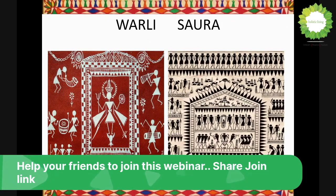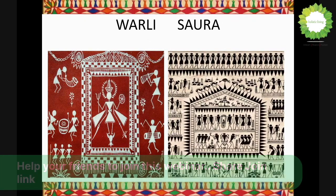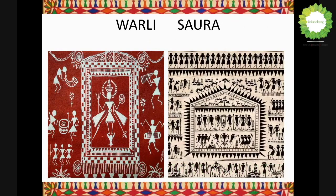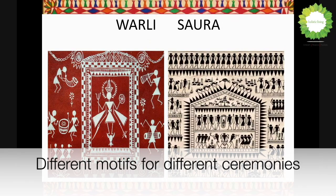The Kudan has knowledge of all supernatural powers — their characteristics, features, and what trouble a particular spirit can bring to the family. Based on the problem, he chooses certain motifs and draws them inside the house. They believe once these motifs are drawn inside the house, they will drive away all evil spirits and bring good luck to the family.